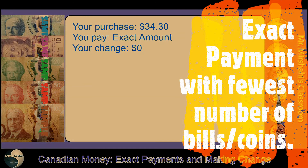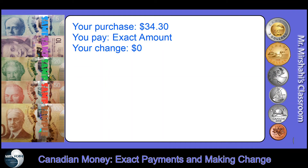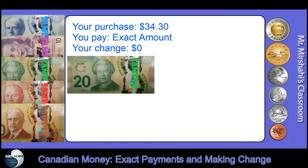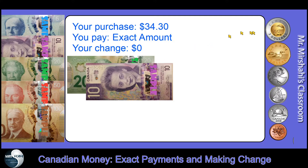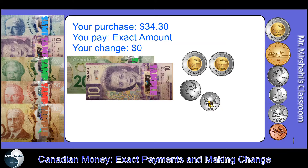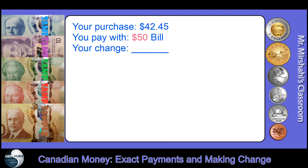Now for exact payment of $34.30 — you shouldn't get any change back. Go to the highest value bill possible and work down: Can I use $50? No. Can I use $20? Yes — $20. Another $20? No, that goes over. So $30. Can I use a dime? No, that goes over $34.30. Can I use a nickel? Yes — so that's exactly 30 cents, making $34.30 exact.